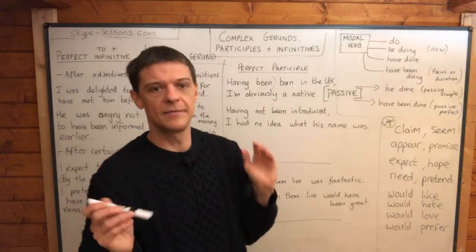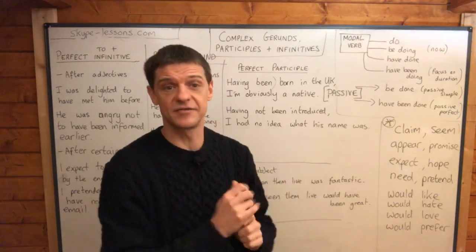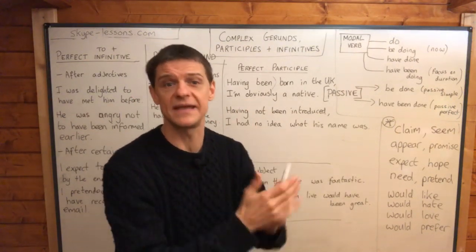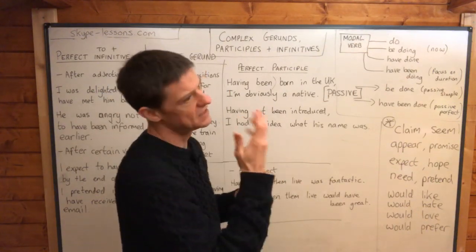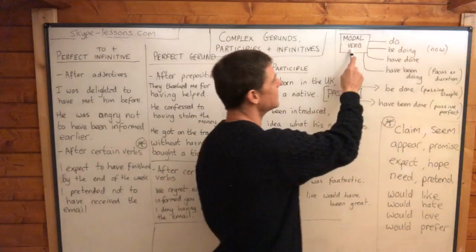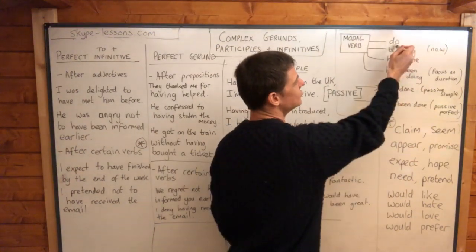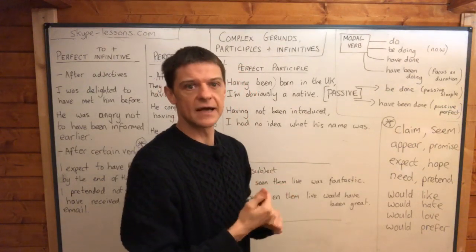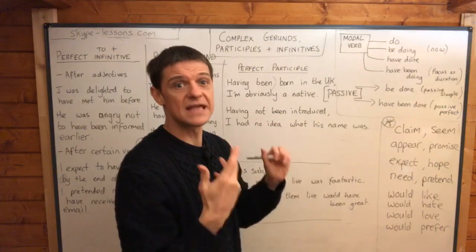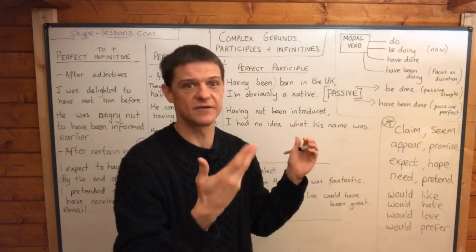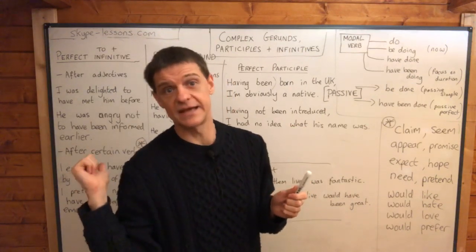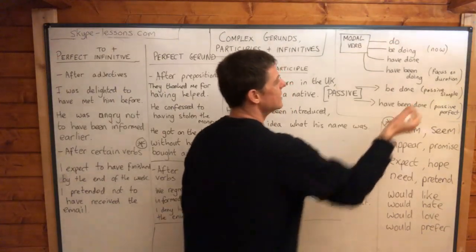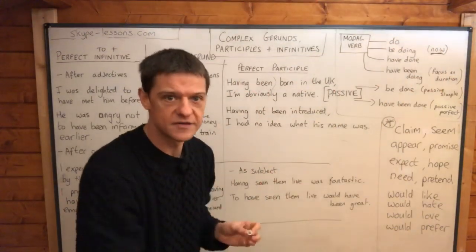If we say something like 'he must be French' — maybe he has a French accent, so you make that deduction. That would be the simple form after the modal verb. But we could also say 'he must be playing tennis because he told me about that yesterday.' Now, this would be the continuous form after the modal verb.